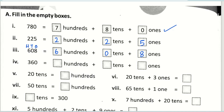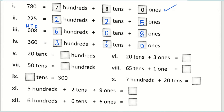The same way — three hundred sixty. Now tell me — how many hundreds? Three hundreds. How many tens? Six tens. And how many ones? Zero ones.